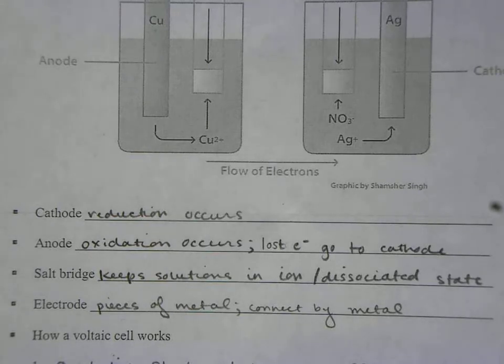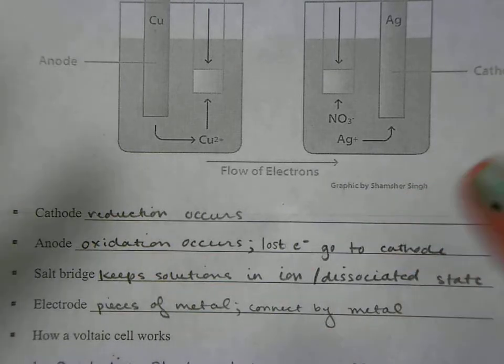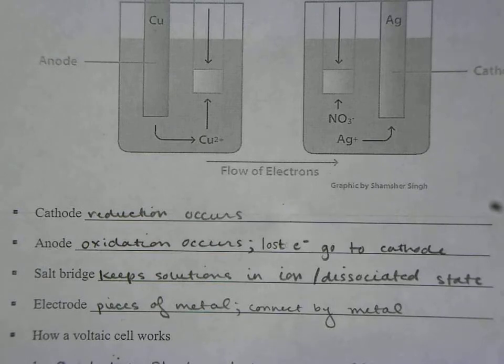The salt bridge is a really important component. It keeps the solutions that your electrodes are in basically in an ionized state. You need ions to be free flowing. Ions are charged particles, so they're losing or gaining electrons and we need them to stay dissociated in the water.